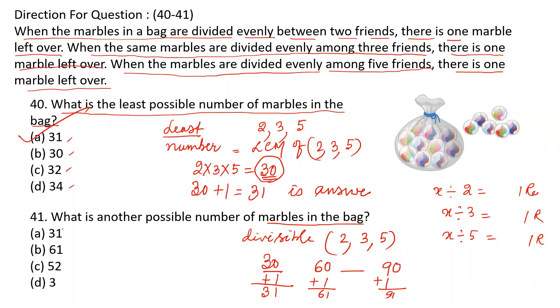Another possible number of the marbles in the bag may be 30 plus 1, maybe 60 plus 1, maybe 90 plus 1. You have to check. 31 will not be the answer. So 61 will be the answer. B is answer of this question.